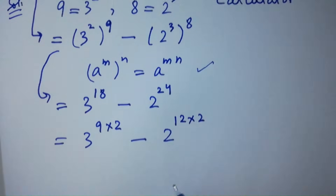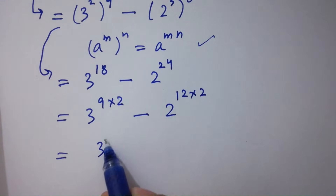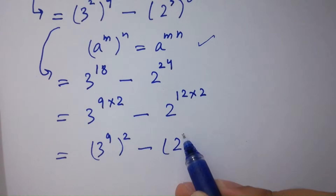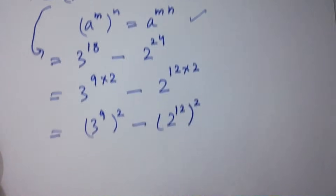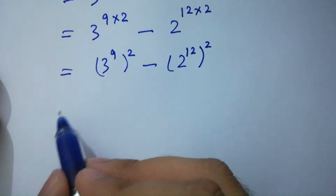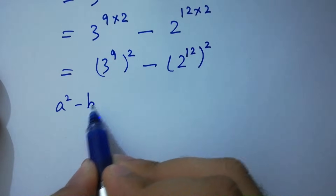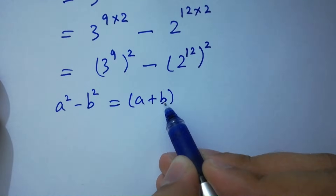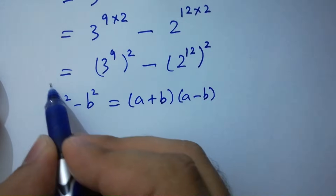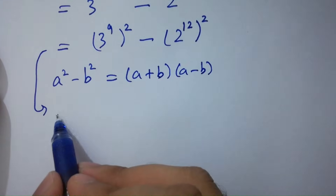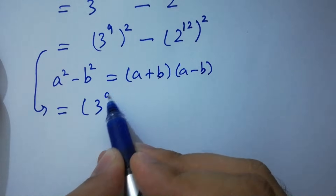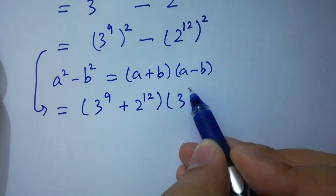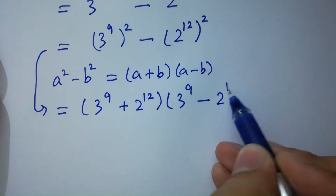We can rewrite this as 3 to the power 9, to the whole power 2, minus 2 to the power 12, to the whole power 2. Now we can use the difference of squares formula: a squared minus b squared equals a plus b times a minus b. We get 3 to the power 9 plus 2 to the power 12, times 3 to the power 9 minus 2 to the power 12.